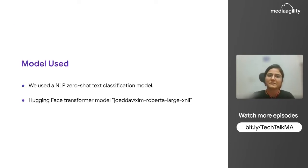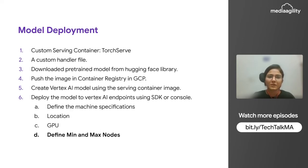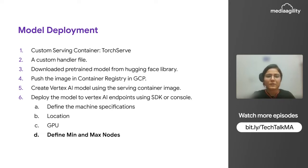The model I chose is the text classification model, and we call it XLM-RoBERTa large XNLI model. The steps to deploy the model — there are a couple of steps defined. The first is we need a custom serving container, and to create that custom container, the base image I am choosing is TorchServe, because the model is fit for TorchServe and this is the standard image provided by the library to serve the modules.